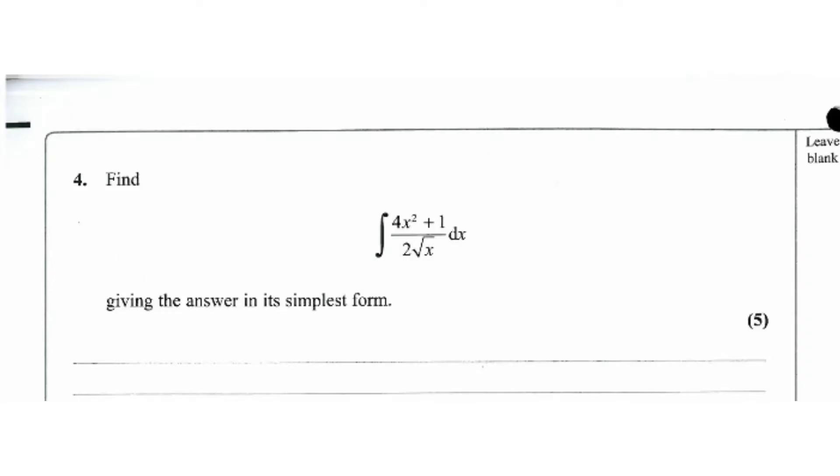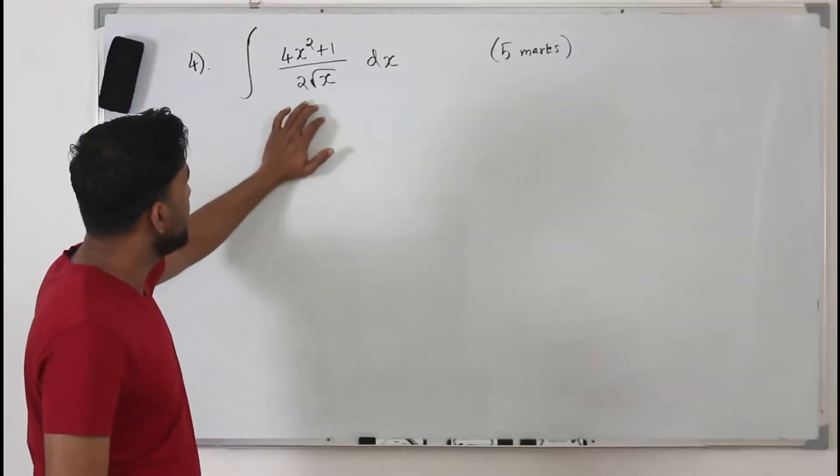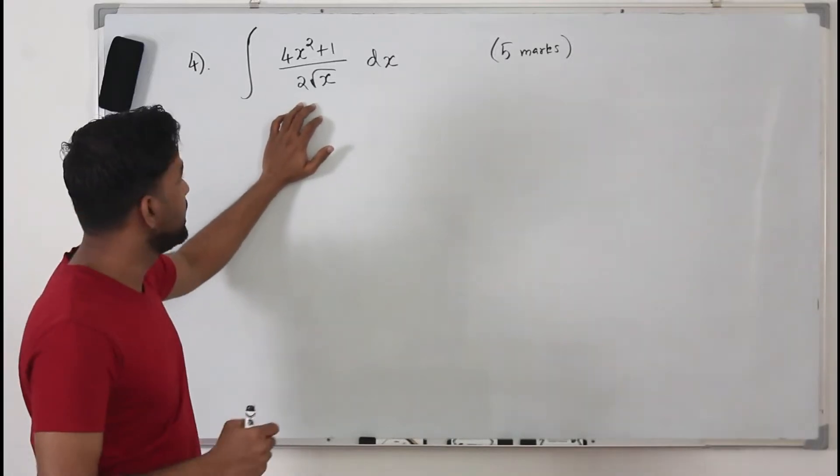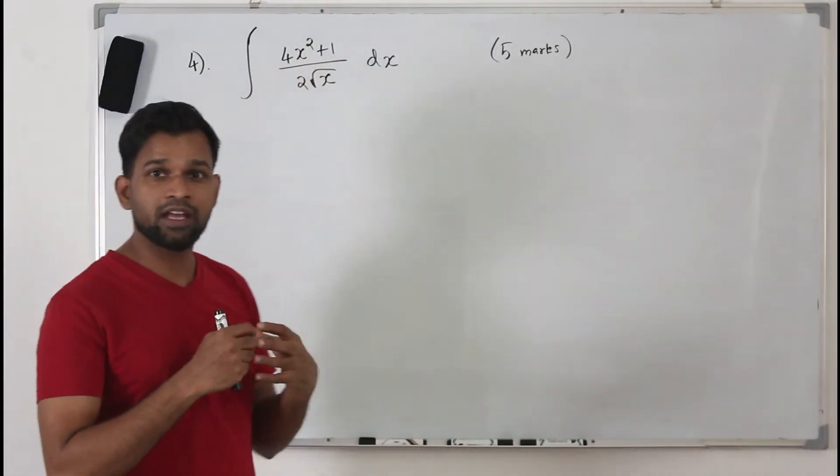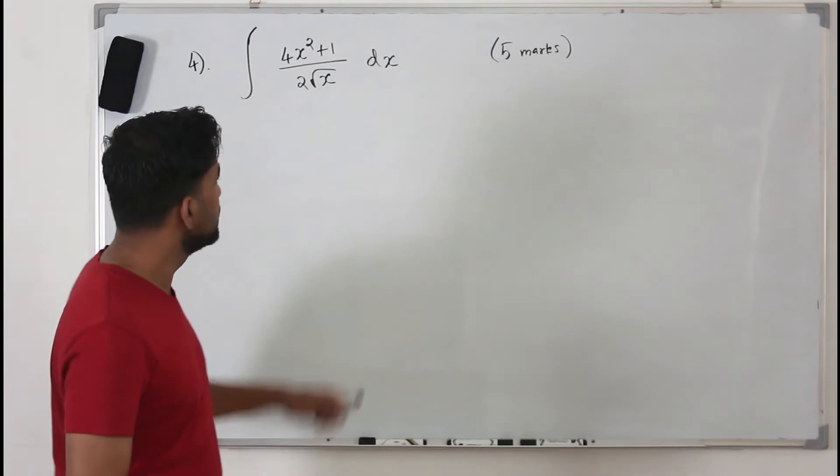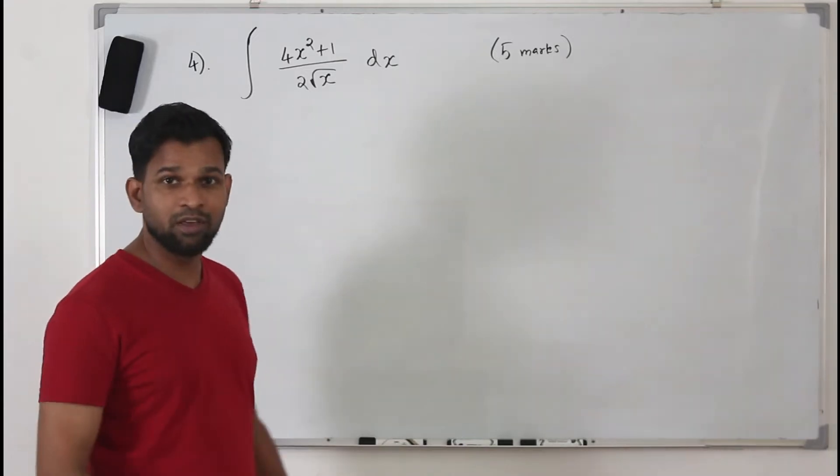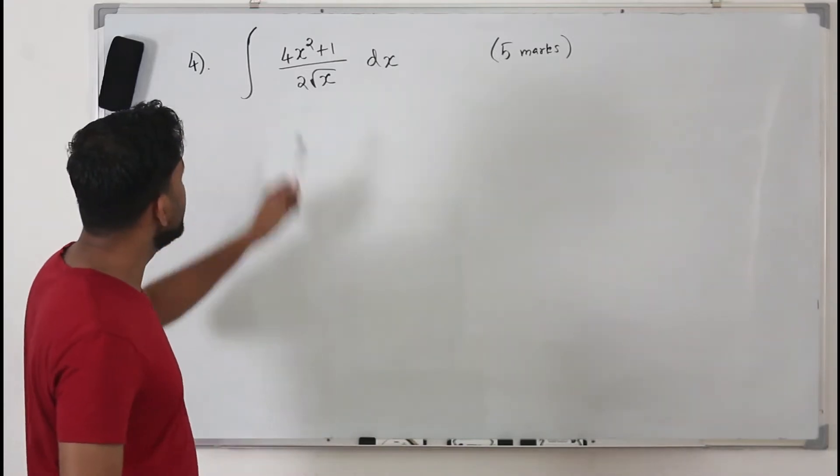Question number four is from integration. You need to integrate this given function and the total marks is five marks. But if you read the question properly, they want you to integrate this and write your answer in its simplest form. So after integration you need to simplify it.